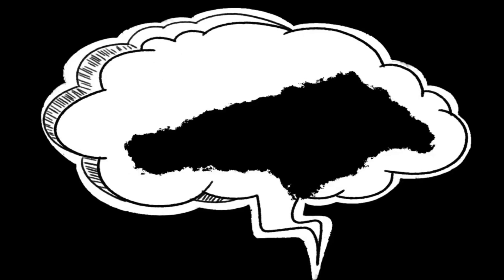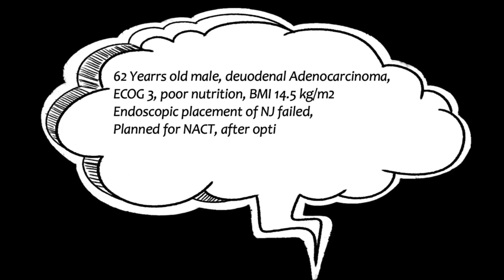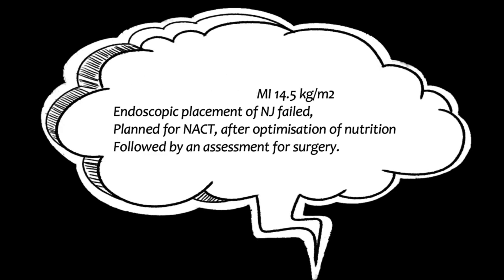There was a historical mistake of not opposing the gastric serosa with the parietal peritoneum, and that has been corrected by Burnol 176 years back. The index case is a 62-year-old male with duodenal adenocarcinoma, poor performance status of ECOG-3, and BMI of 14.5. Endoscopic placement of NJ tube failed, and he was planned for neoadjuvant chemotherapy after optimization of nutrition, followed by assessment for surgery.